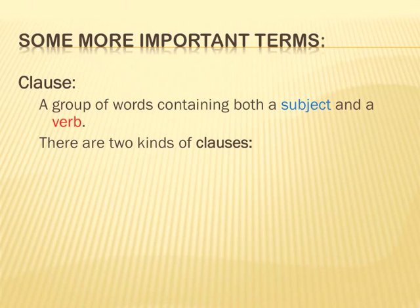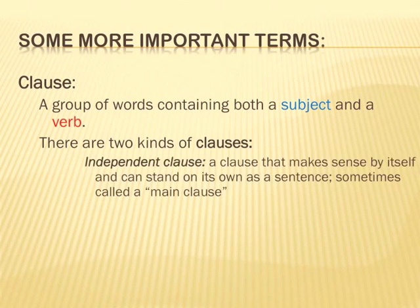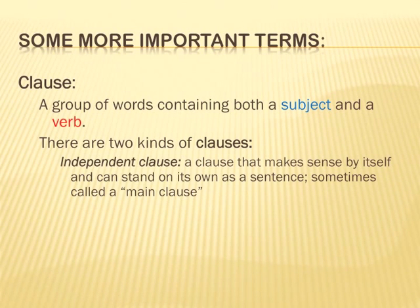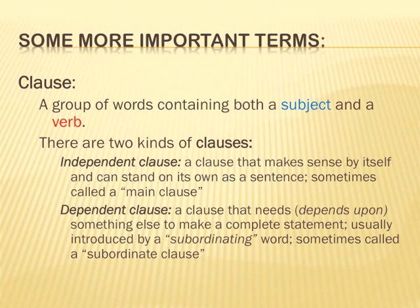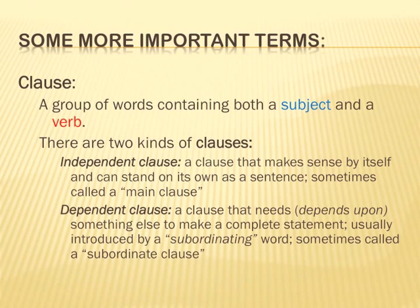There are two kinds of clauses, and it's very important that you distinguish clearly between the two. An independent clause is a clause that makes sense by itself and can stand on its own as a sentence — sometimes called the main clause. There are also dependent clauses. A dependent clause needs or depends upon something else to make a complete statement. It's usually introduced by a subordinating word, and is sometimes called a subordinate clause.